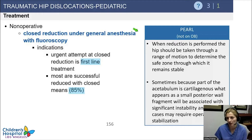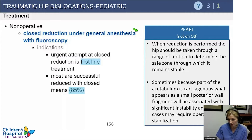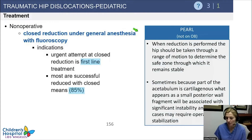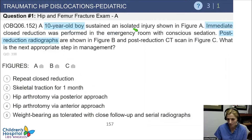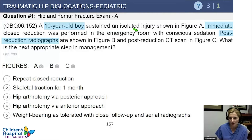Sometimes stability is easier to assess from your exam than from imaging, because in young children the acetabulum has a large cartilaginous component. You may see what looks like a small posterior wall fragment — sometimes those are fine and can be treated nonoperatively, and sometimes those are associated with significant instability requiring operative stabilization. Use the time while the child is under anesthesia to evaluate how stable your reduction is.